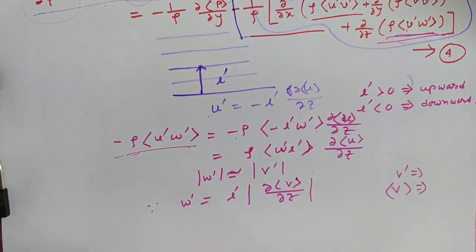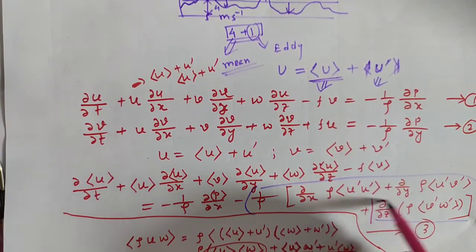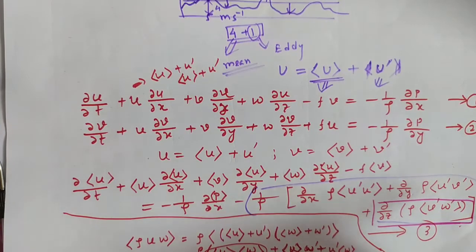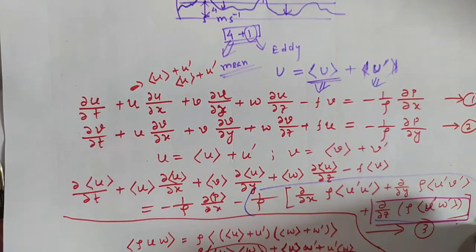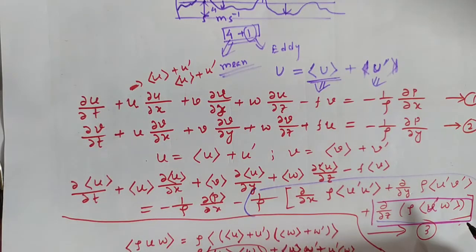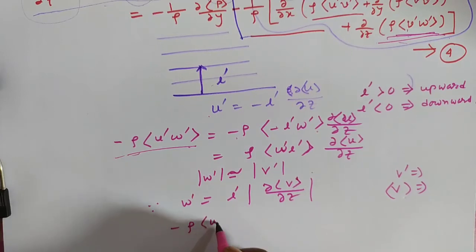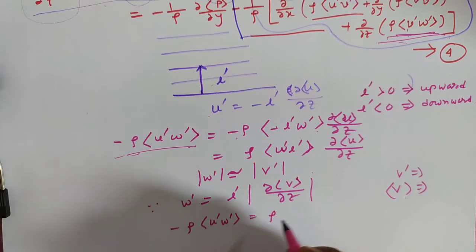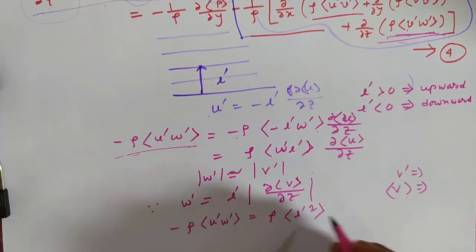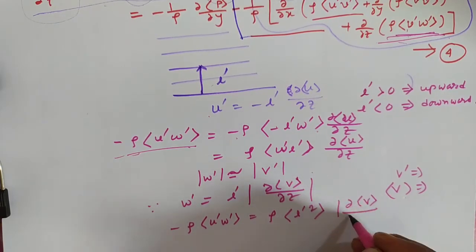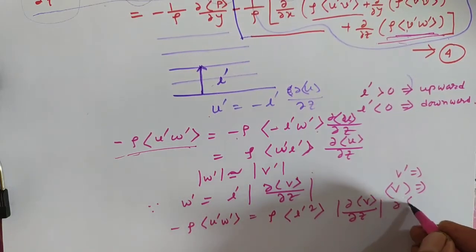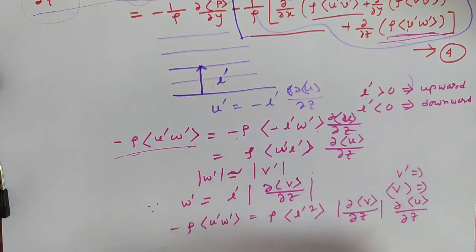From equation 3, we use the term rho U prime W prime. This term will simplify because we now know the value of W prime. So minus rho U prime W prime equals rho L prime squared times del V del Z times del U del Z. We substitute this value to obtain this result.